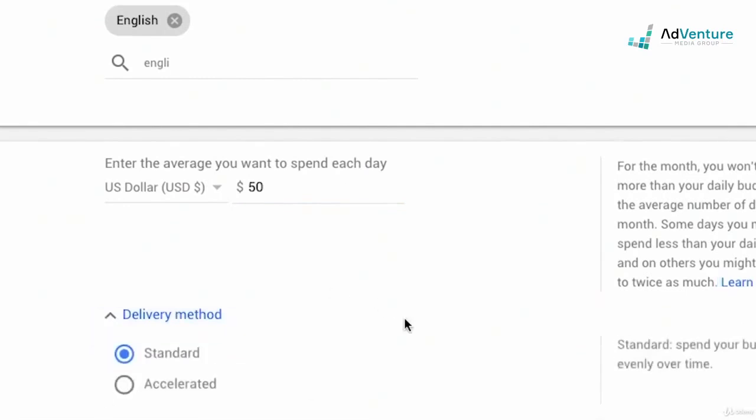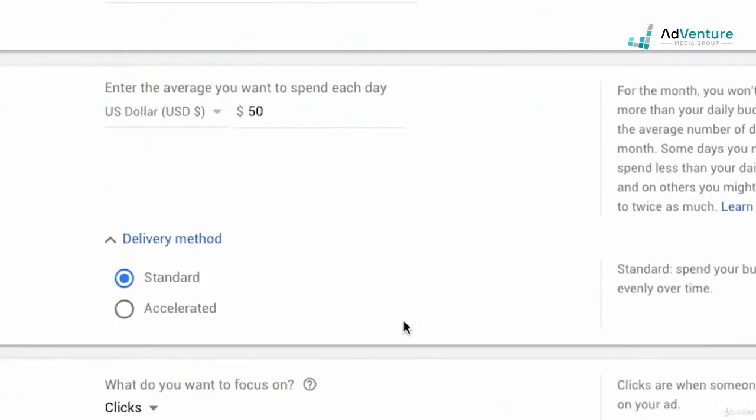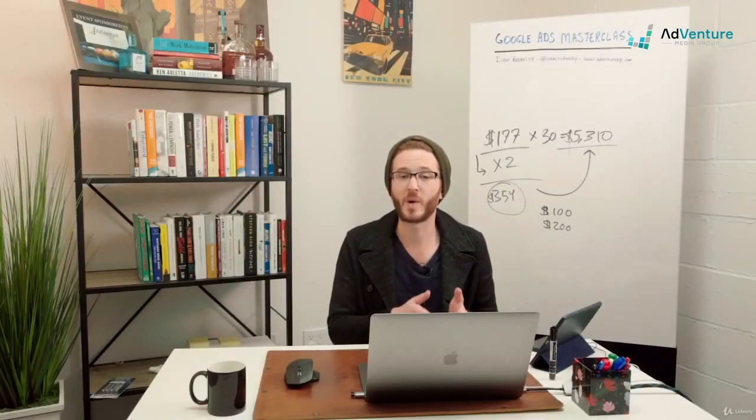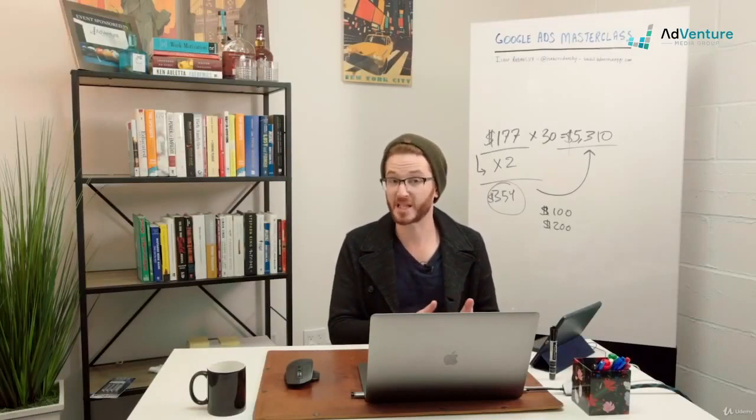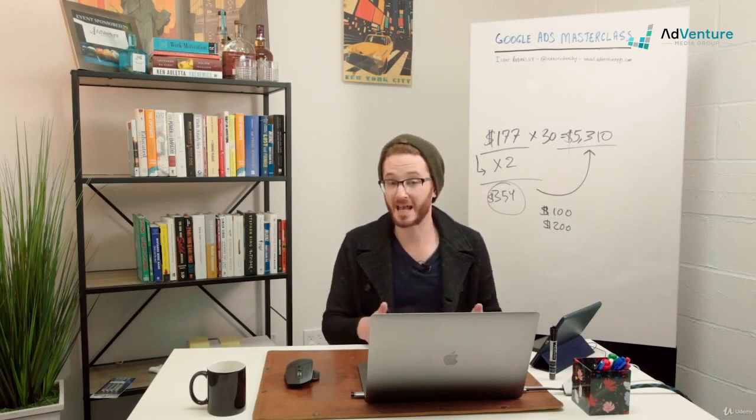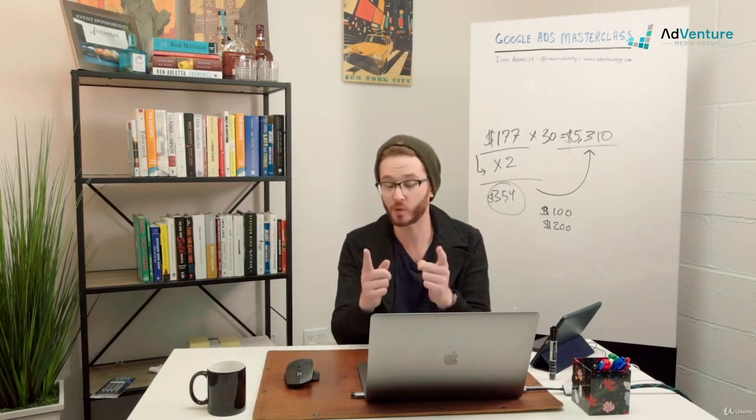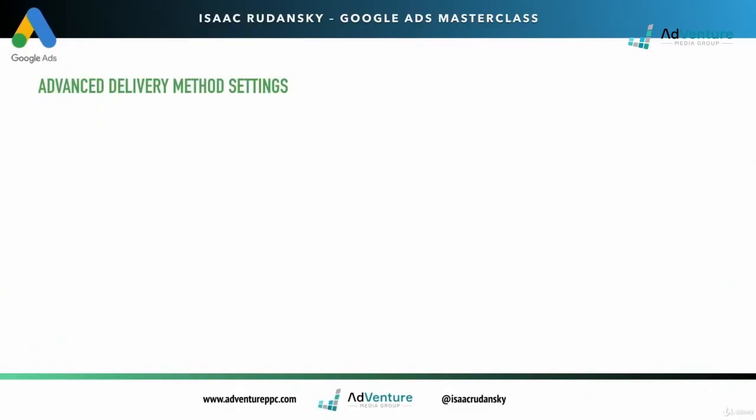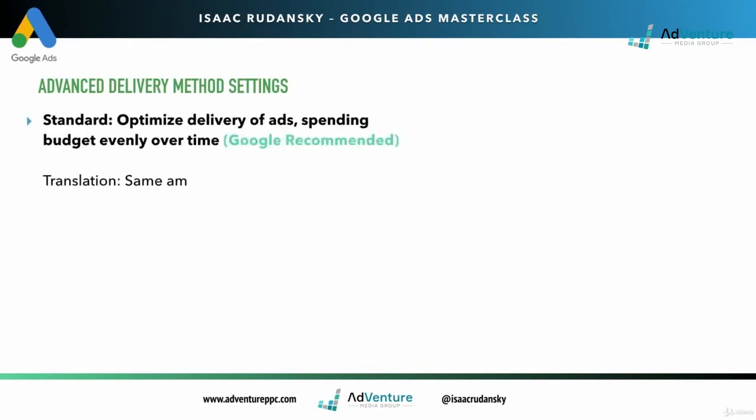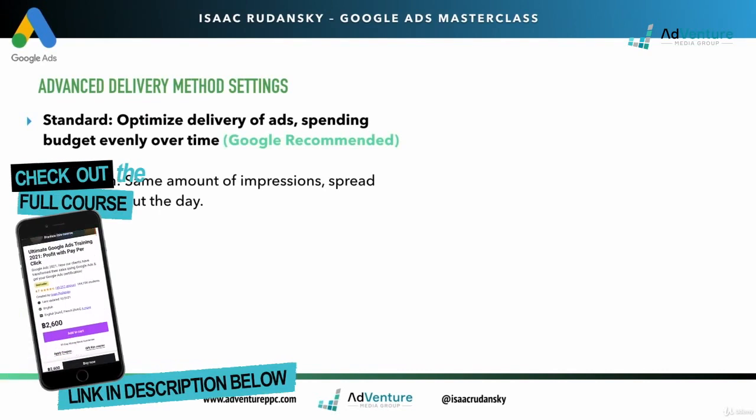Now I'm going to delivery method. If I twirl down delivery method, which is an advanced setting, we have two options: standard delivery method and accelerated delivery method. I want to jump into a slide to explain exactly how this works. How do you want us to deliver those impressions to you? Do you want them all at once, as fast as possible, or do you want them throughout the day? When you choose standard as an option, you're optimizing the delivery of your ads, spending budget evenly over time.